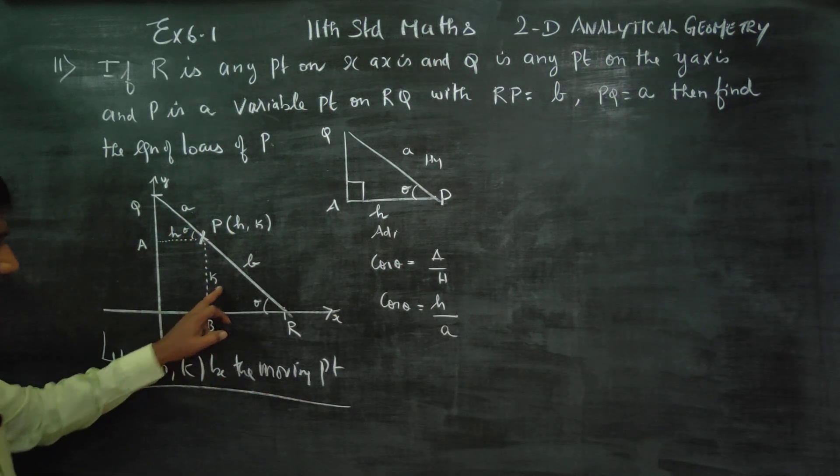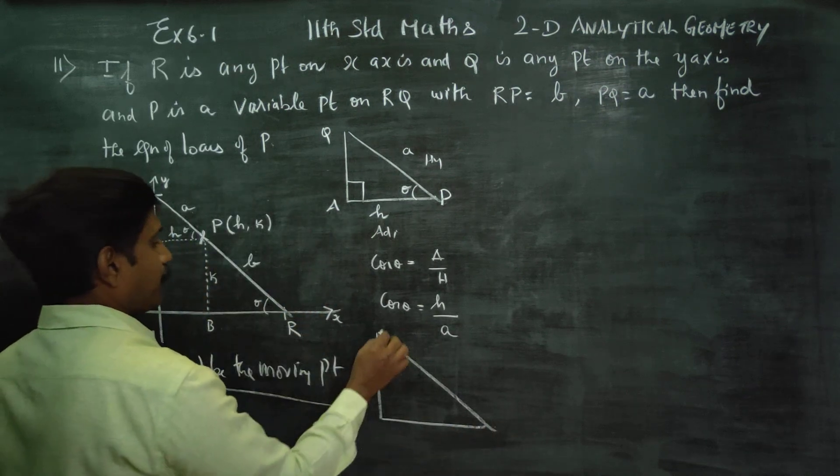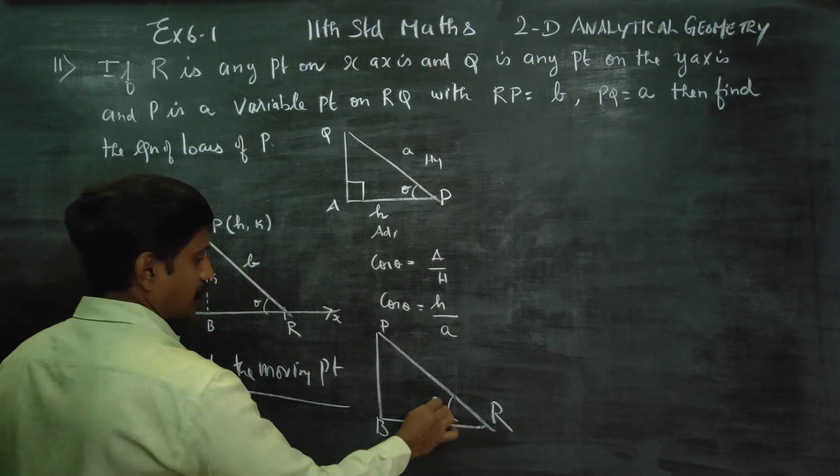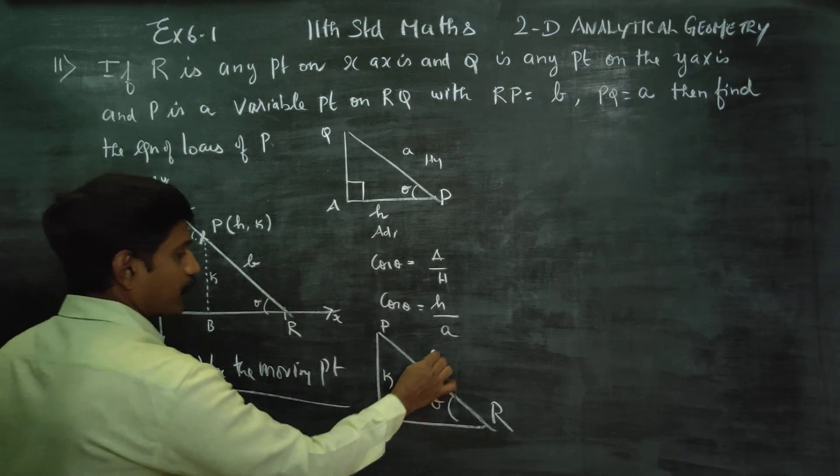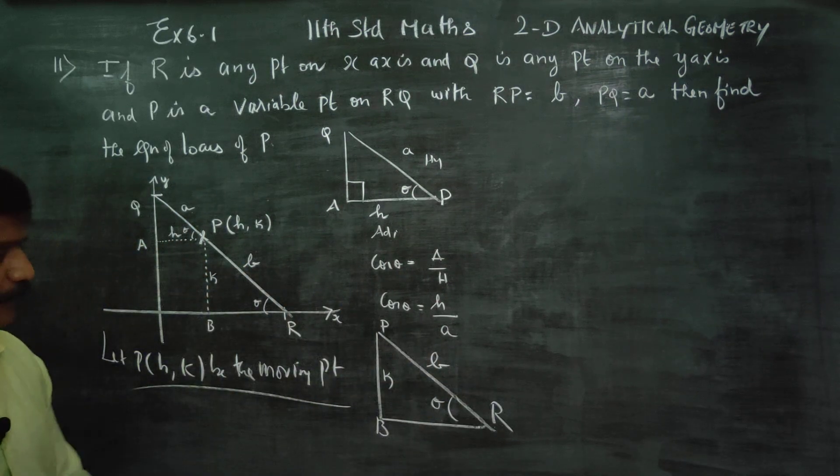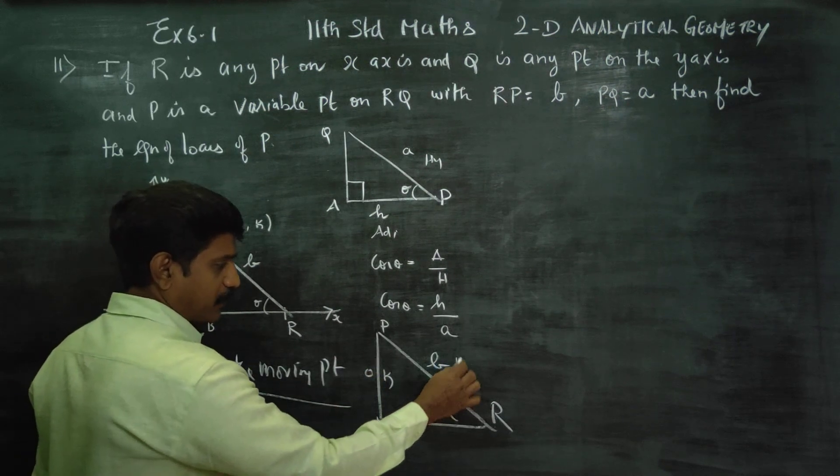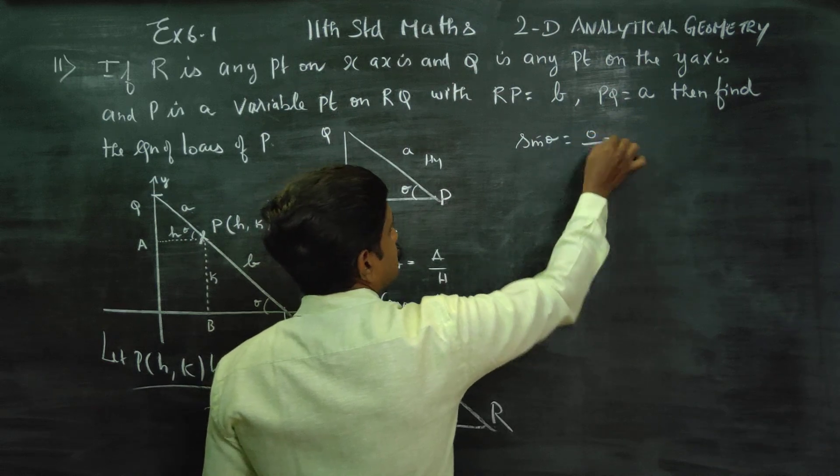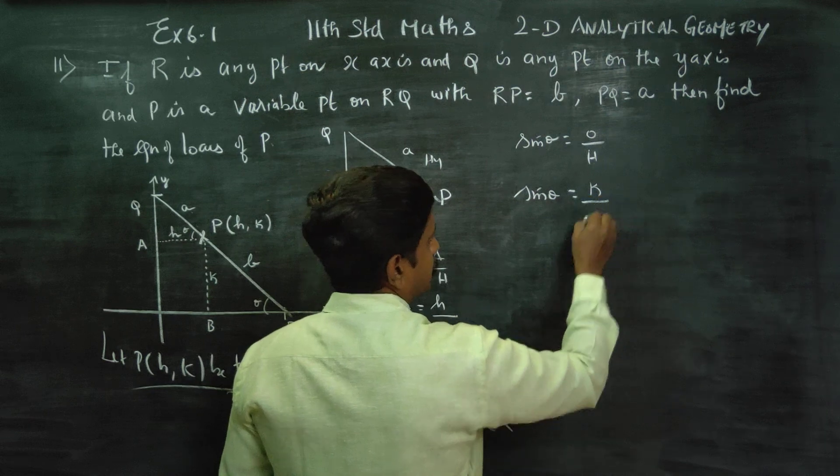You can see this triangle. This triangle is P, B, R. This is theta. This is K. This is the hypotenuse, this is the opposite side. Sin theta is equal to opposite by hypotenuse. Sin theta is equal to opposite side K by B. Right?